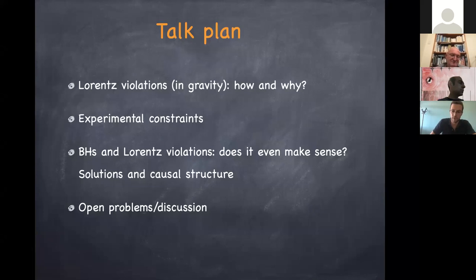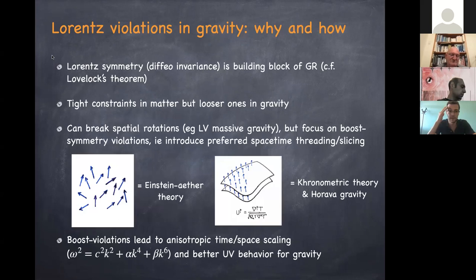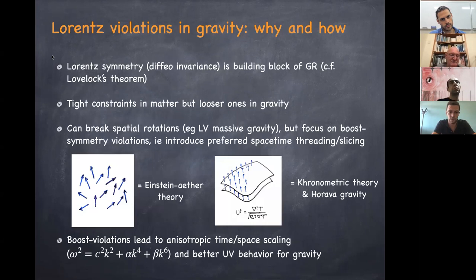Lorentz symmetry in the form of diffeomorphism invariance is one of the building blocks of general relativity, and it's very tightly constrained in the matter sector. However, the bounds in the gravitational sector have been much looser until very recently. So it makes sense to try to violate Lorentz symmetry in the gravitational sector — just to see if we can put tight constraints on those violations.